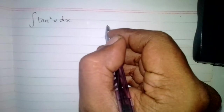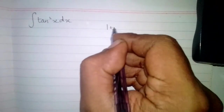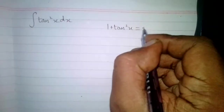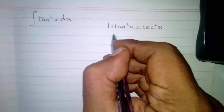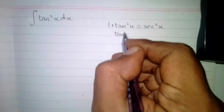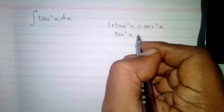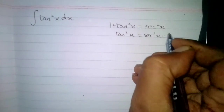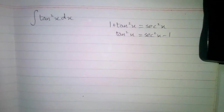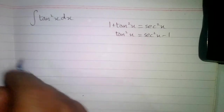In this video we will find the integral of tan²x. We know that 1 plus tan²x is equal to sec²x, so tan²x can be written as sec²x minus 1.